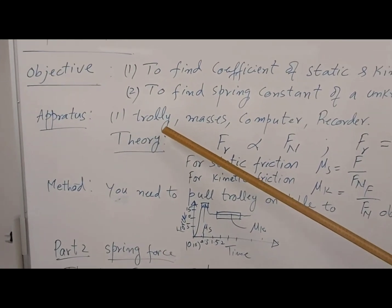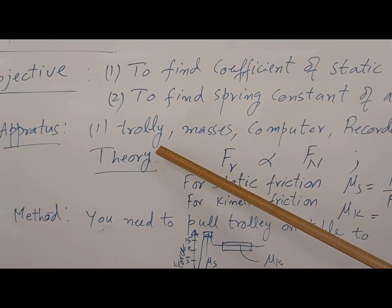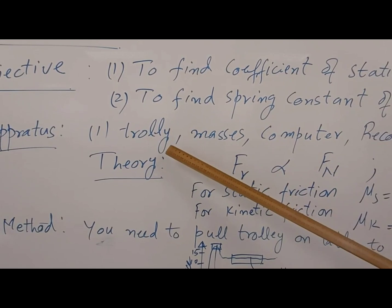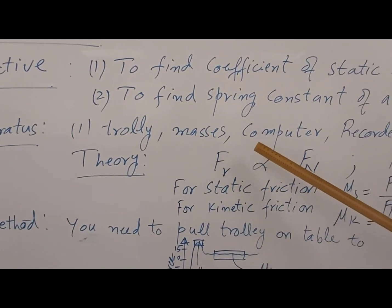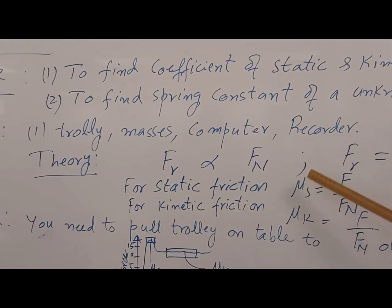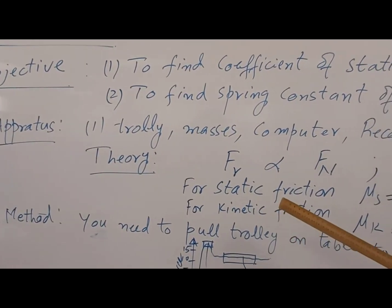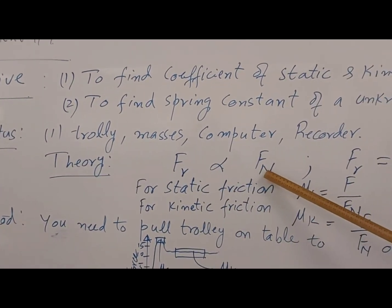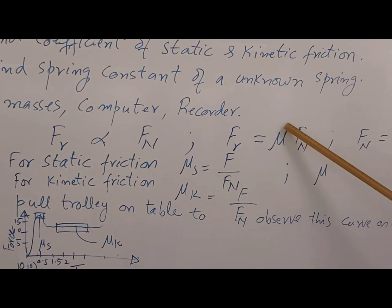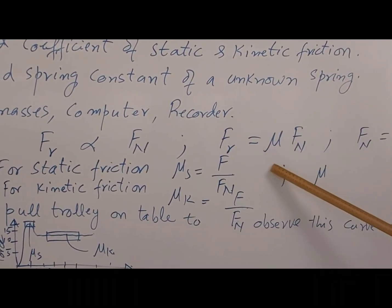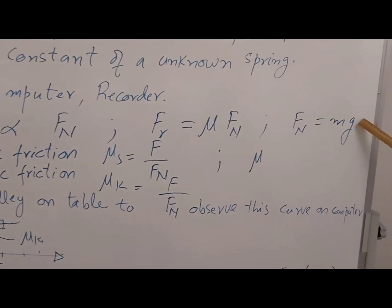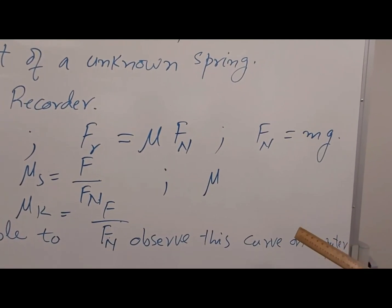To do the experiment, you pull a trolley on the table with some weight. For this you need masses, a computer, and a recorder — some device which will send the data to the computer. From theory, as you know from your classroom, frictional force is directly proportional to the normal force. The equation is: frictional force equals mu, the coefficient of friction, times Fn. The normal force on the table is mg, so Fn equals mg.